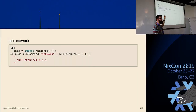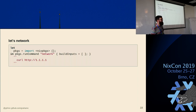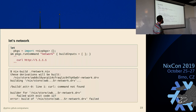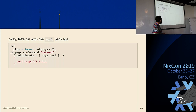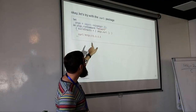What's going to happen when I run this next example? It will fail — curl's not in the build inputs. So let's go to the next one where we add curl.